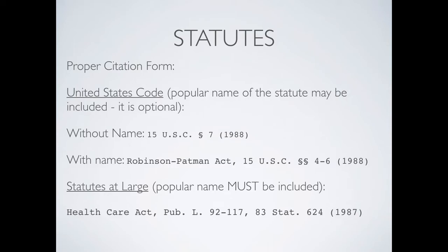Let's look at statutes. The United States Code is where we keep all of those federal statutes. You do not have to include the proper name of the act or the law if it has already been codified in the United States Code — if it has already been published there, you simply need to cite to the code section. Here's an example without the name: that would be 15 U.S.C. § 7 (1988). You always want to put the year that code was enacted.